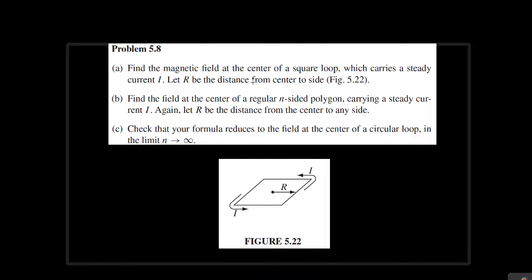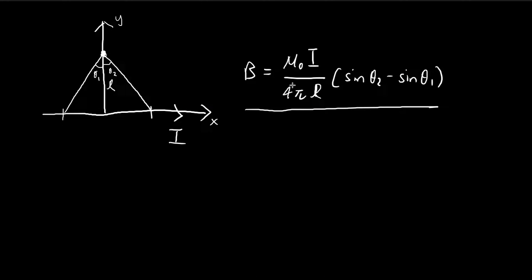In order to solve part A, we're going to use one of the results from an example in the book. The example tells us that if we have a piece of current, the amount of magnetic field at this point contributed by this section is going to be given by this formula.